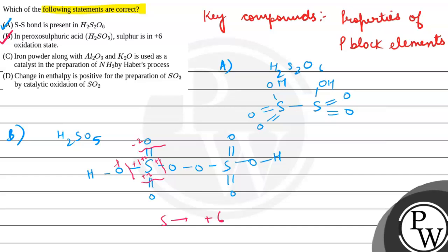So we have iron powder as a catalyst, but Al2O3 and K2O are promoters, not catalysts. So this statement is incorrect.